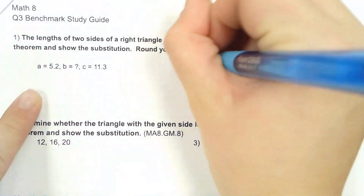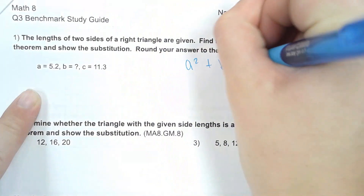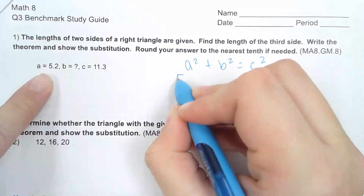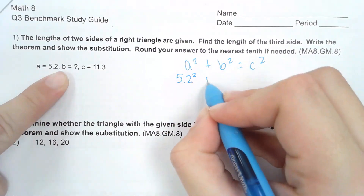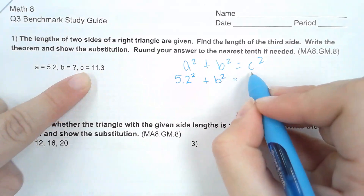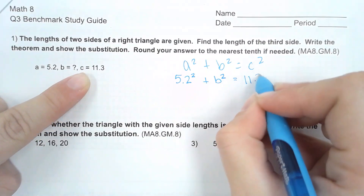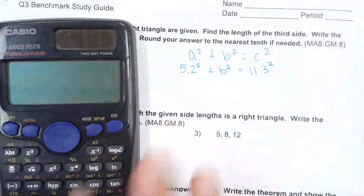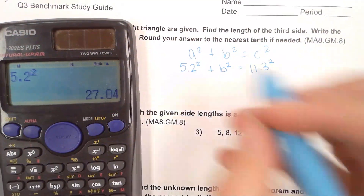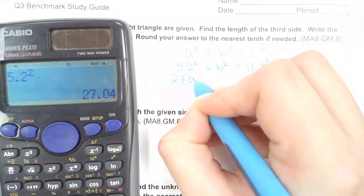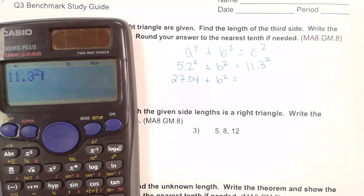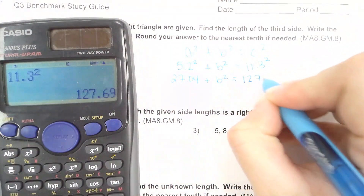Using the Pythagorean theorem, we know our theorem is a² + b² = c². They tell us that a is 5.2, so I'm going to substitute 5.2 in for a. We don't know what b is, so we're going to leave it as b. And then c is 11.3. So after substituting in your numbers, you are then just going to solve it. So 5.2 squared is 27.04. The b squared is going to stay. 11.3 squared is 127.69.